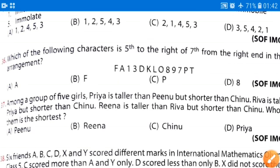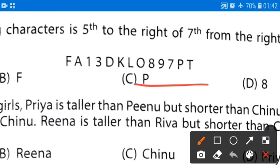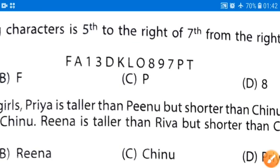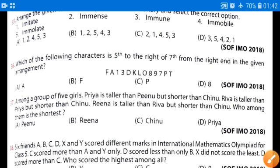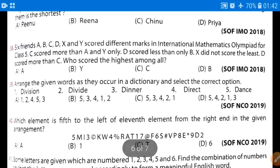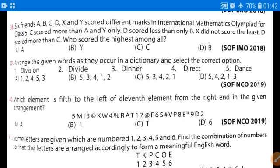What we have to do? We have to choose the fifth character to the right of seventh character from the right. Means from right come to seventh position and again from that position we have to move five right. We will get P. Now, coming to the next question that is question number 39. Arrange the given words as they occur in a dictionary and select the correct option.